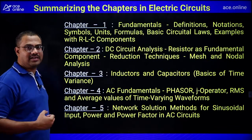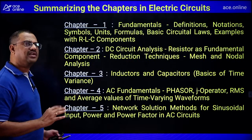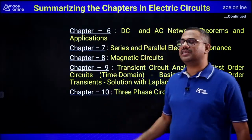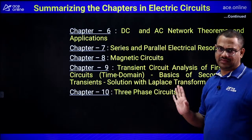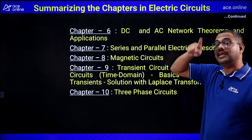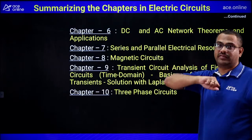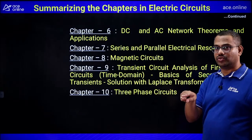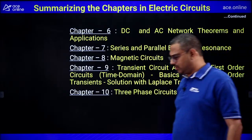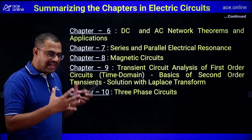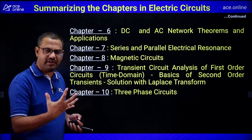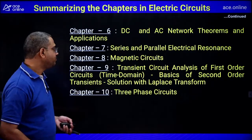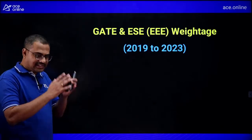Within each chapter, many subsections are covered in detail. For example, there are 10 network theorems total — starting from source transformation, superposition, Thevenin, Norton, and so on. For each theorem, multiple models are covered: for Maximum Power Transfer Theorem alone, about 13 models; for Thevenin's Theorem, about 30 models covering cases with and without dependent sources. Lectures run 60 to 80 hours, sometimes up to 100 hours depending on student feedback and understanding.